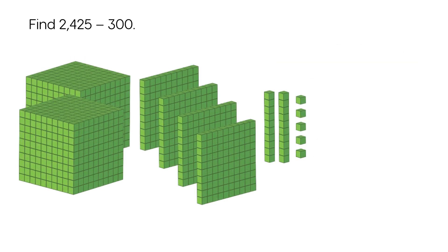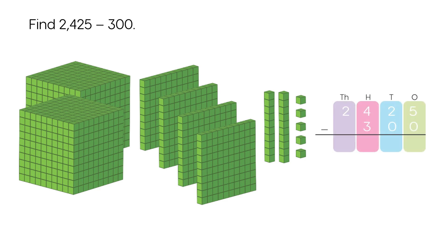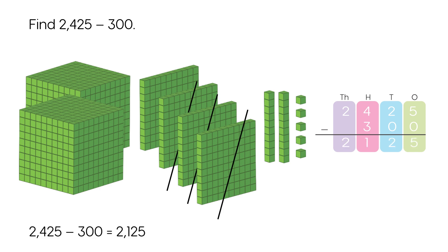Find two thousand four hundred twenty-five minus three hundred. Two thousand four hundred twenty-five minus three hundred equals two thousand one hundred twenty-five.